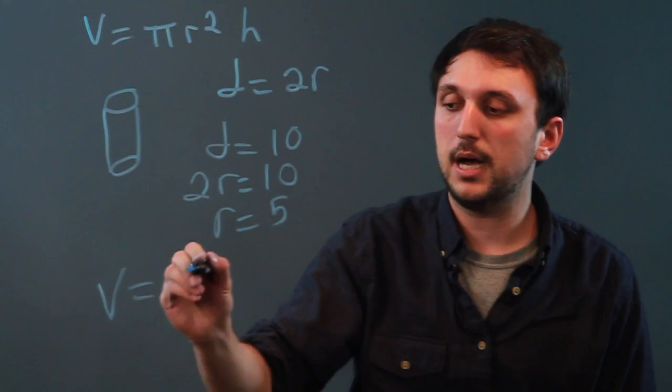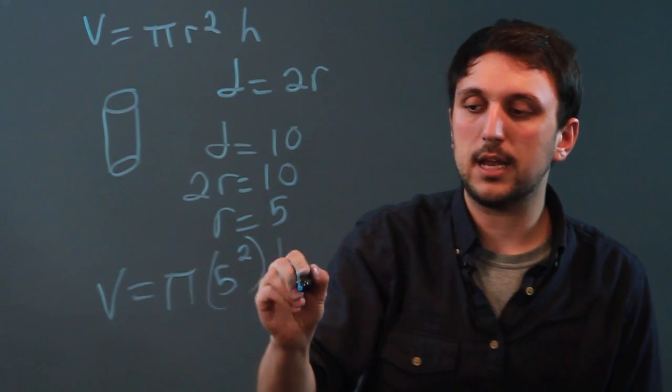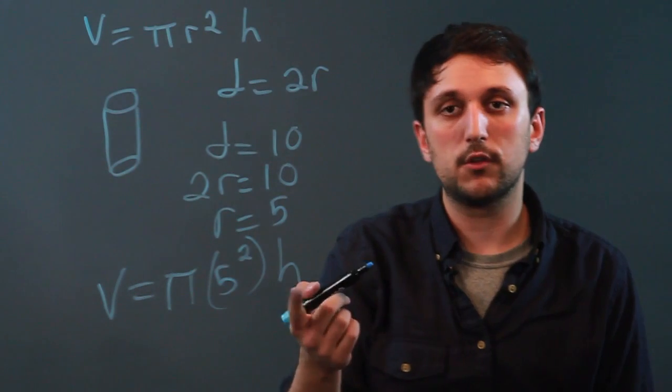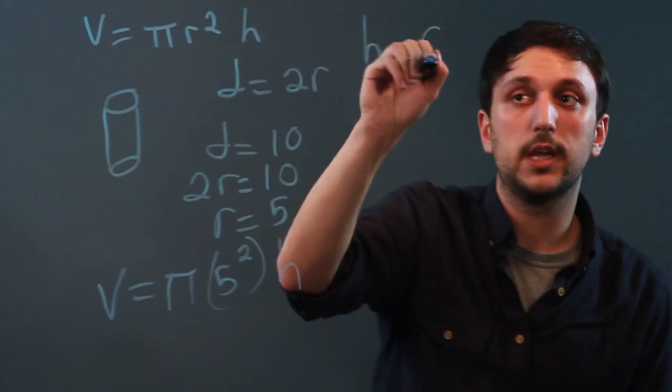V equals pi 5 squared h. Well, where's our h? We would still need an h. So let's make h equal to 6.